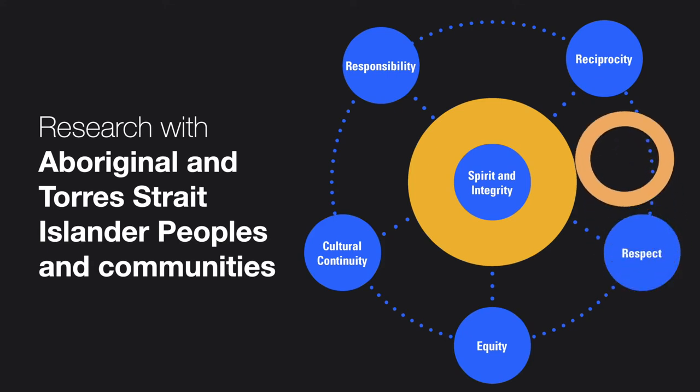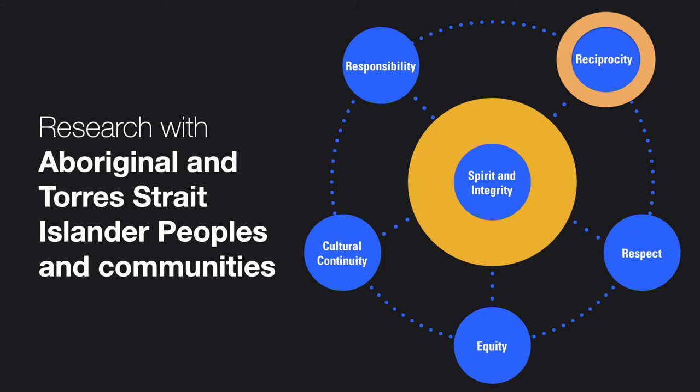Aboriginal and Torres Strait Islander people's ways of sharing responsibility and obligation are based on their kinship networks. This process keeps their ways of living and family relationships strong. These responsibilities also extend to caring for country. Reciprocity recognises all partners' contributions and ensures the benefits from research outcomes are equitable and of value for Aboriginal and Torres Strait Islander people and communities.